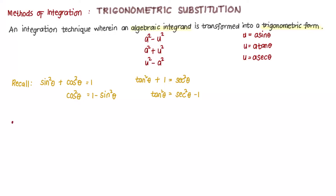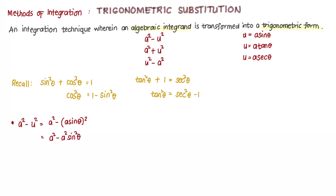For the first pattern, a squared minus u squared: we substitute, because u is equal to a sine of theta, so we have a squared minus a sine theta quantity squared, which gives a squared minus a squared sine squared theta. Factoring out a squared, we get a squared times 1 minus sine squared theta. From the identity, 1 minus sine squared theta equals cosine squared theta. Therefore, a squared minus u squared equals a squared cosine squared theta.